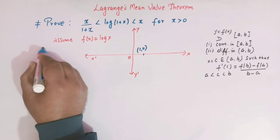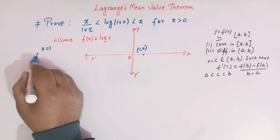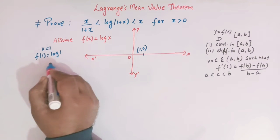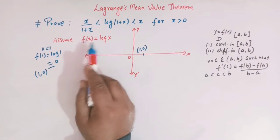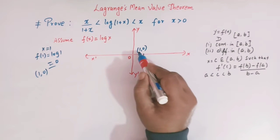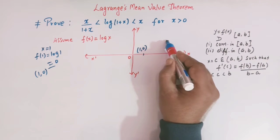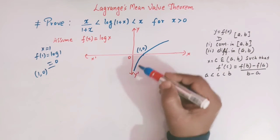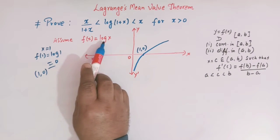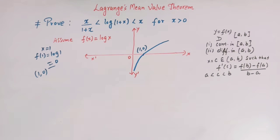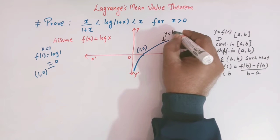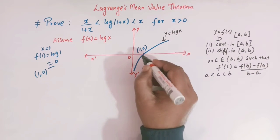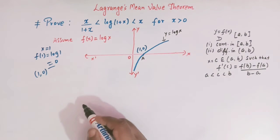The graph passes through the point (1, 0), because when x = 1, f(1) = log(1) and log(1) = 0. So the graph of log x cuts the x-axis at (1, 0). Here we are drawing the rough sketch of the graph of f(x), and this is the graph of y = log(x), with point a at (1, 0).